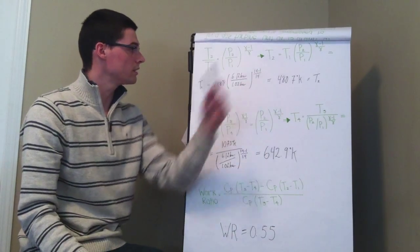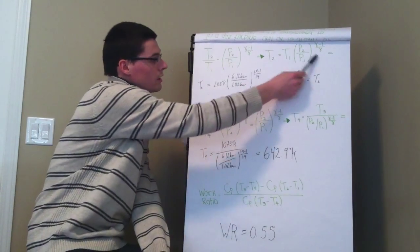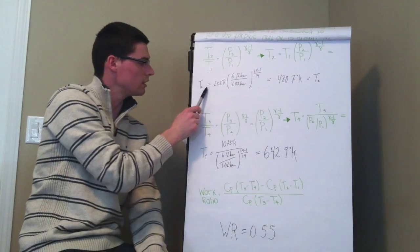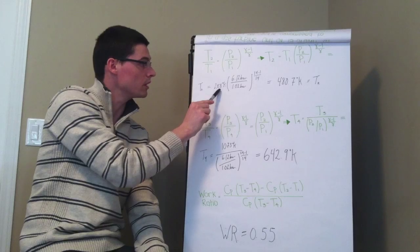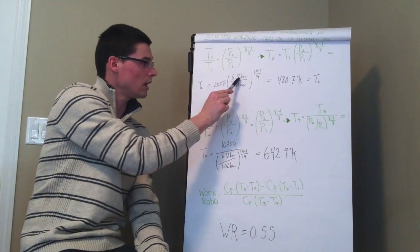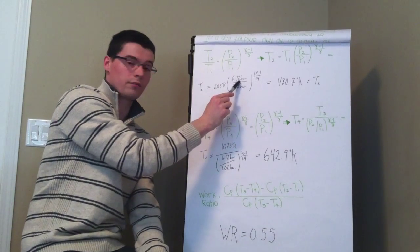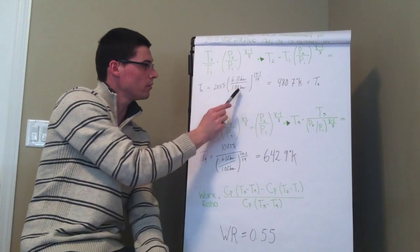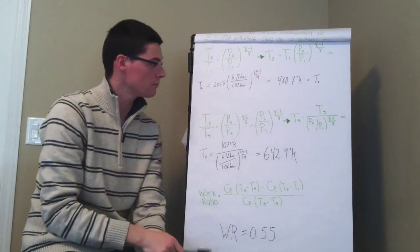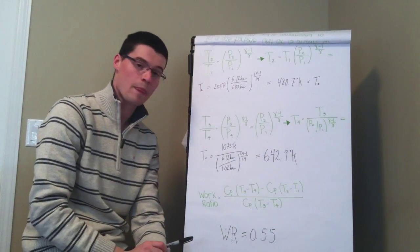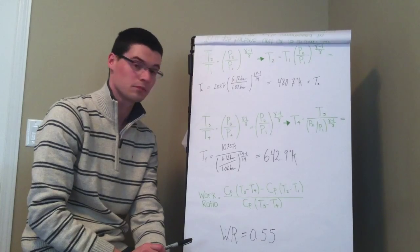So we can very easily solve for T2 using this formula here. And as you can see, T2 equals 288 Kelvin, being T1, times the ratio of P2 divided by P1 to the power of gamma minus one divided by gamma. And that works out to about 480 degrees Kelvin. It's pretty hot.